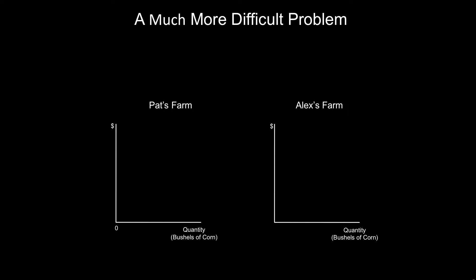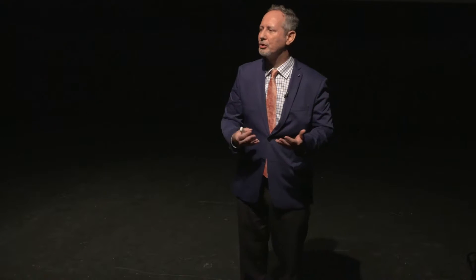Now let's consider a much more difficult problem. We set the marginal cost equal — but now suppose that you, as a central planner, don't know the marginal costs on either farm. Let's even go further: suppose that no one knows the marginal cost on both farms. How can you possibly allocate production across the two farms to minimize your total costs? I put it to you that the central planner essentially has no way of solving this problem. The central planner does not have the information required.